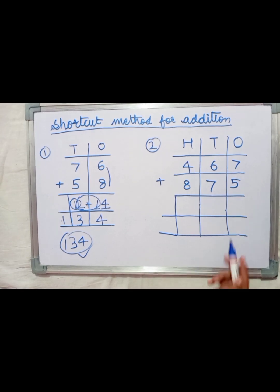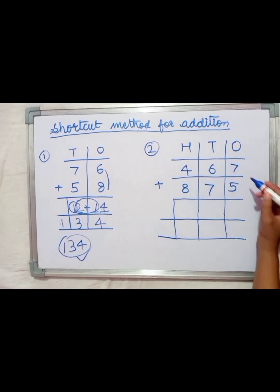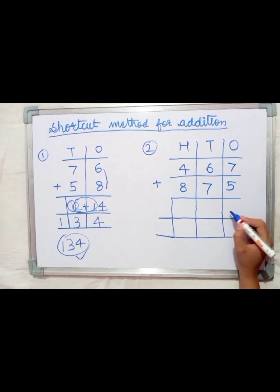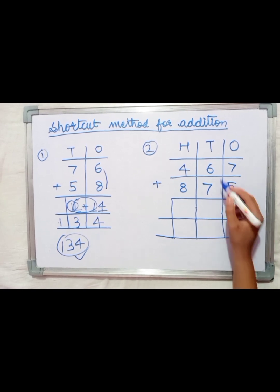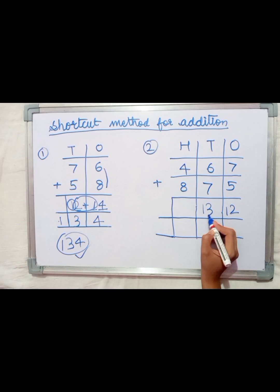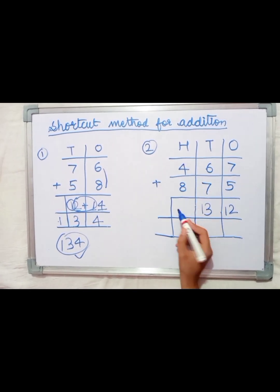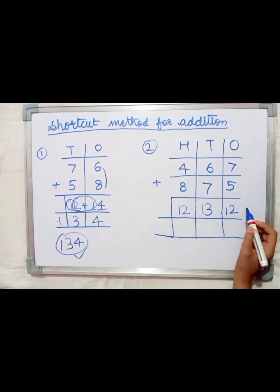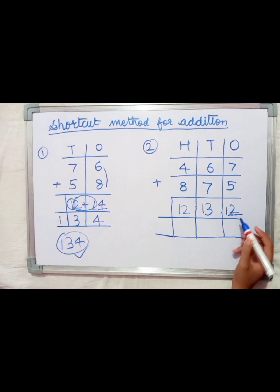Let's take another example with a three-digit number. Add 7 plus 5 equals 12, 7 plus 6 equals 13, 8 plus 4 equals 12. Then write 2 as is.